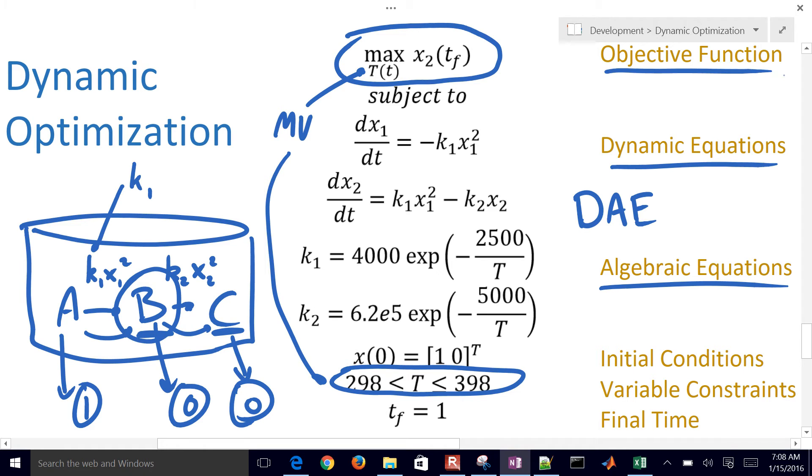And as you saw before, that had upper and lower bounds there. So here's our dynamic optimization problem. We have an objective function, we have some dynamic equations, algebraic equations, we have initial conditions, variable constraints, and a final time.